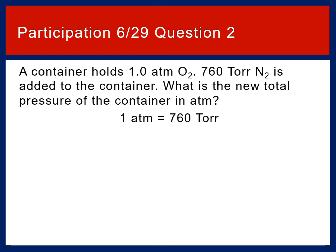Participation 629, question 2: A container holds 1.0 atmospheres of O2. 760 torr of N2 is added to the container. What is the new total pressure of the container in atmospheres? A potentially helpful conversion factor: 1 atmosphere equals 760 torr. This is due Tuesday, June 29th at 11:55 p.m. on Blackboard. A link to the assignment is right below the links to these videos.